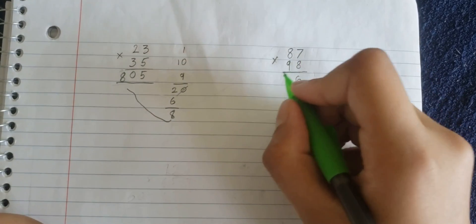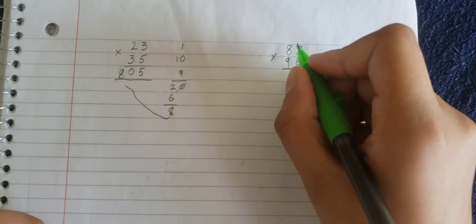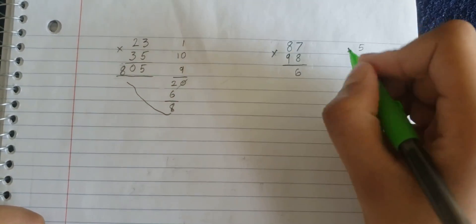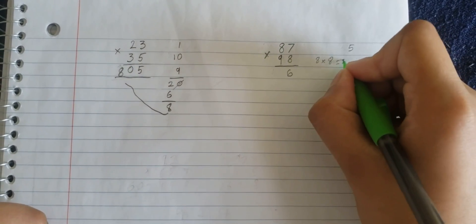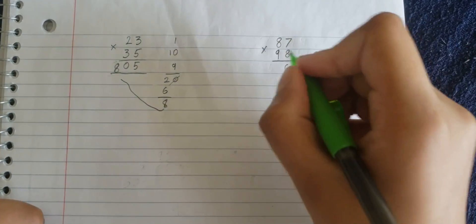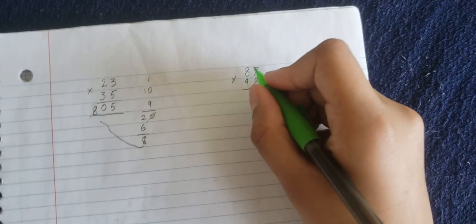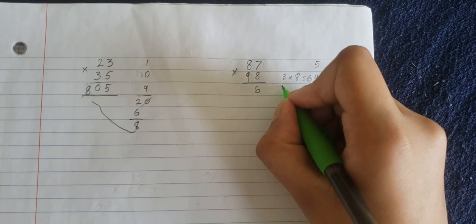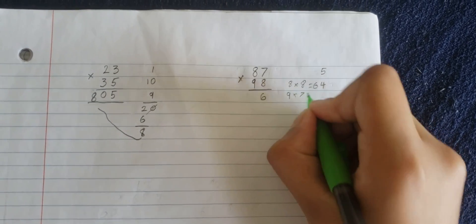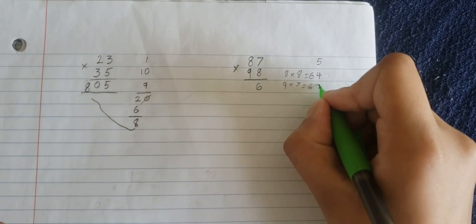Now, I'll show you what you do next, clearly. Cross multiply 8 times 8. 8 multiplied by 8 is equal to 64, plus 9 7s are 63. 9 multiplied by 7 is equal to 63.